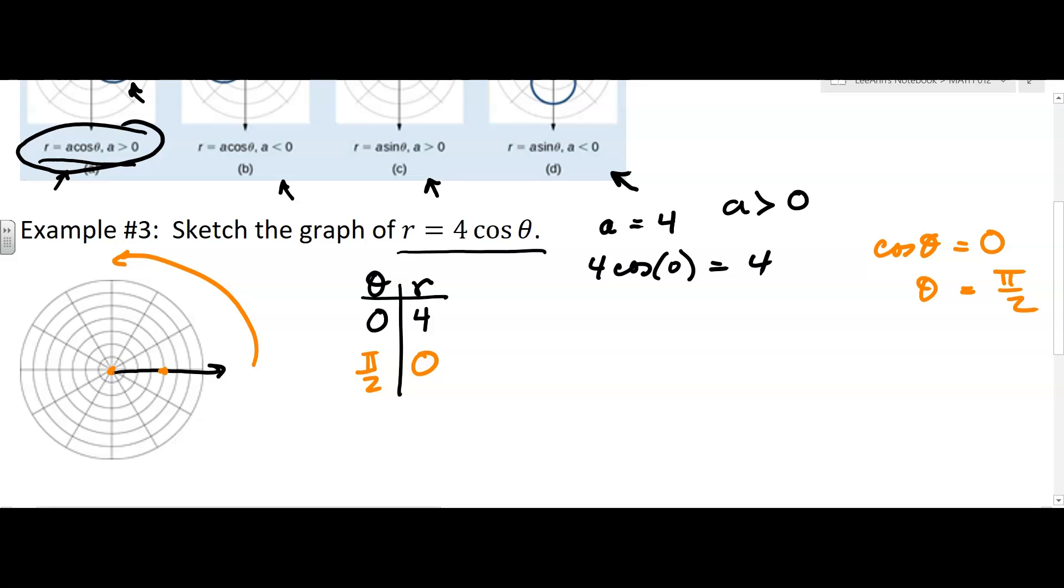And then you can find more ordered pairs. Now, maybe a good one to find would be pi over 3. That might be a good one, that might be friendly. So I'd have r equals 4 cosine pi over 3. But what's the cosine of pi over 3? 1 half. And so I would get 2. So I go to pi over 3, which is right here. This is pi over 3 right there. And I go out 1, 2.